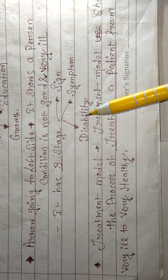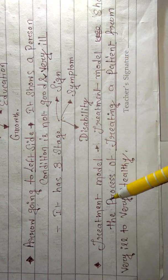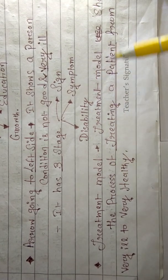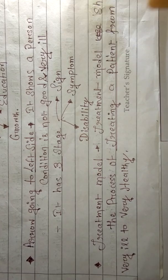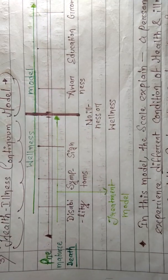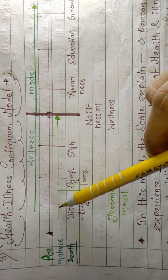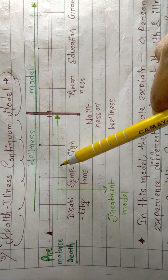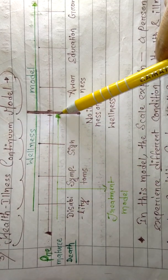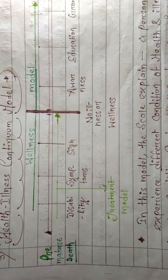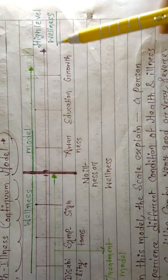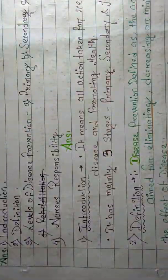The treatment model shows the process of treating a patient from very ill to very healthy. The patient was very ill and disabled, but after receiving proper treatment they move towards a very high level of wellness and become healthy.